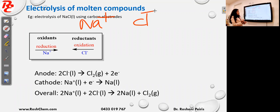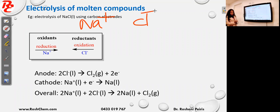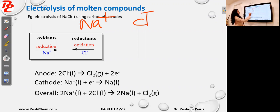The second step is you group them as oxidants and reductants. For that you can use your electrochemical series in your data book. Na⁺ is an oxidant — you find that on the left hand side of the electrochemical series. Cl⁻ is on the right hand side, therefore it is a reductant. Oxidants are undergoing reduction and reductants are undergoing oxidation.